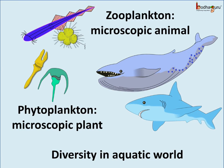The oceans, rivers, lakes, and ponds are full of living things — aquatic animals and aquatic plants. The aquatic habitat not only has single-celled plants and animals, but also huge whales, sharks, octopus, and more. There is great diversity of life. The single-celled plants are called phytoplanktons and the single-celled animals are called zooplanktons.